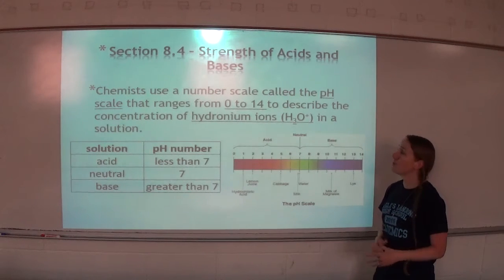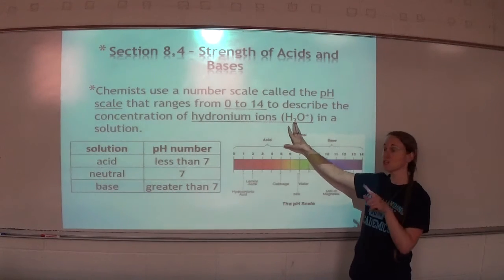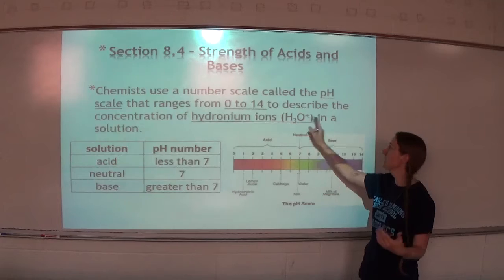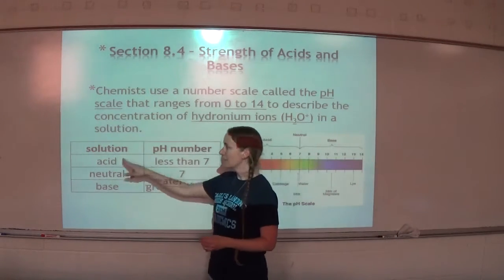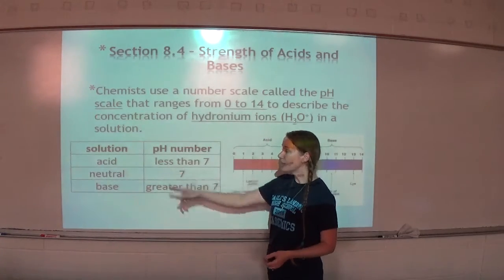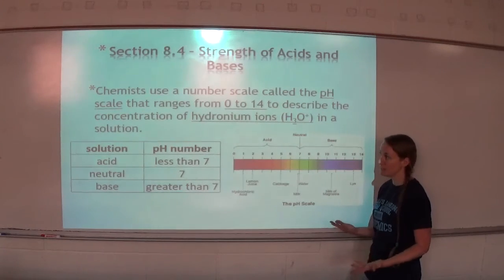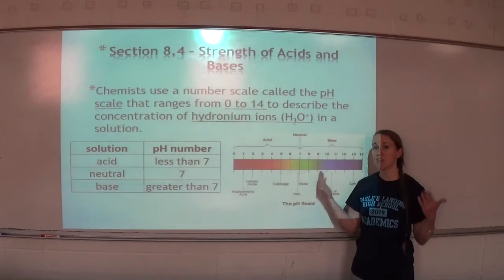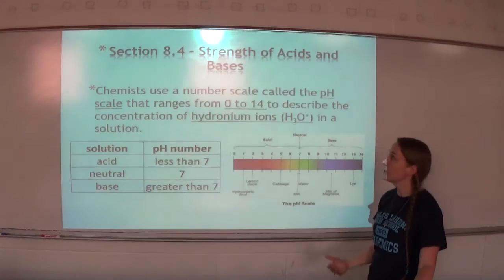Chemists use a number scale called the pH scale that ranges from 0 to 14 to describe the concentration of hydronium ions, which is H3O+, produced by an acid in a solution. A pH of less than 7 indicates an acid, a pH of exactly 7 indicates neutral, and a pH of greater than 7 indicates a base. That's the pH scale and what we use to determine how much acid is in a solution.